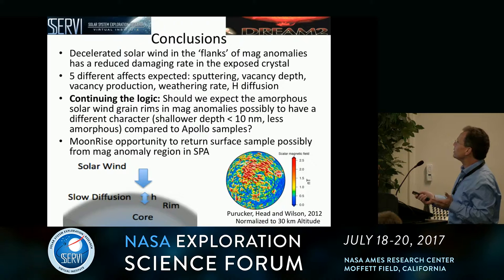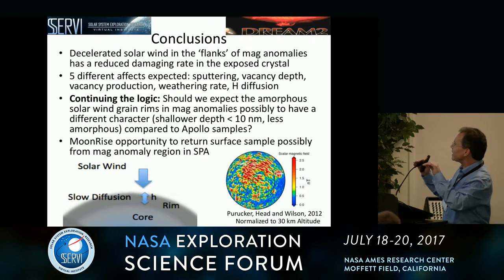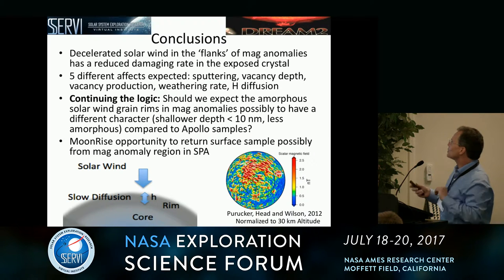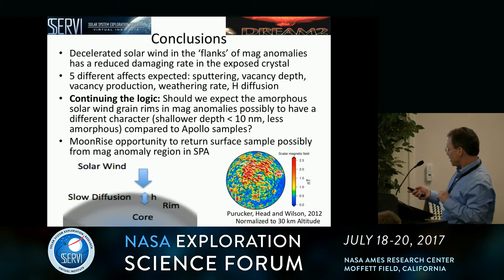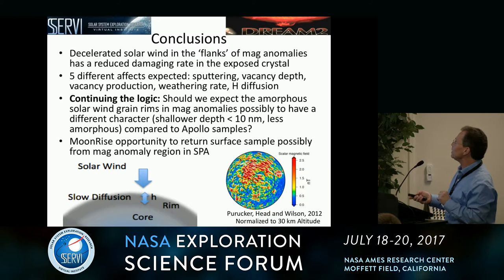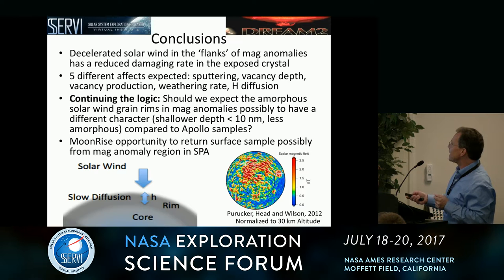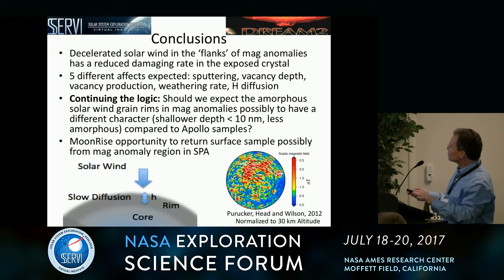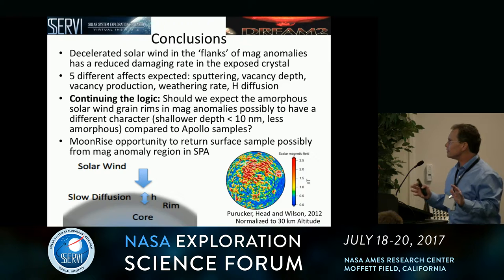To conclude: the deceleration of solar wind in locations where there's a more horizontally oriented magnetic field may have a reduced damaging rate in the crystal. There are five effects as a consequence of this deceleration: reduced sputtering, reduced vacancy depth, reduced vacancy production, a slower weathering rate, and quicker hydrogen diffusion.